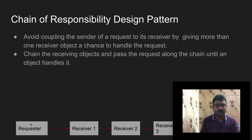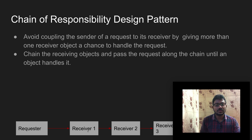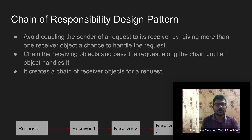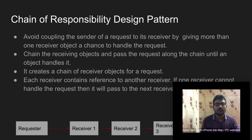The request is passed along the chain until an object handles it. For example, when logging into Amazon with a username and password, receiver one handles only permission-related information — checking whether the username and password are valid. After that, receiver one acknowledges receiver two, which then takes further jobs and passes the remaining work to receiver three.